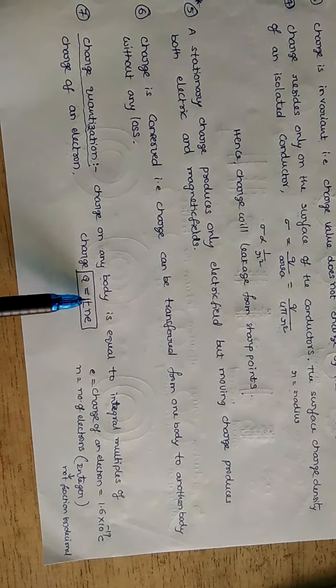That is why charge quantization statement is: charge on any body is equal to integral multiples of charge of an electron. Look at this basic formula, q equals plus or minus Ne. Charge may be positive or negative, where n is number of electrons. It must be an integer, not fraction or decimal. Small e indicates charge of electron, which is 1.6 into 10 power minus 19 Coulomb.